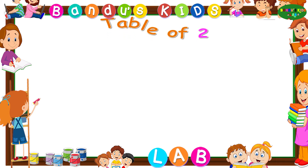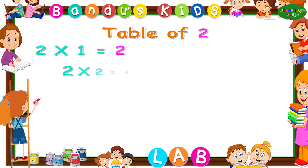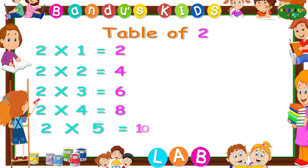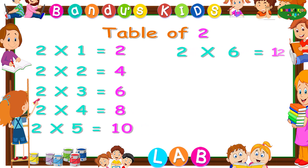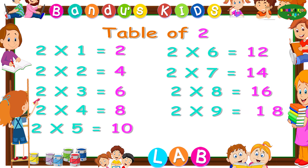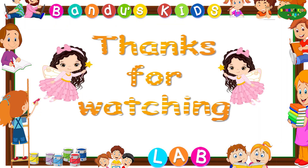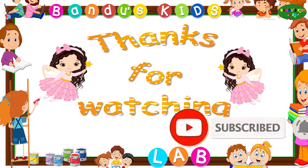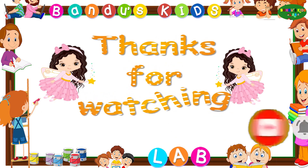Now let's revise the table of two. Two ones are two. Two twos are four. Two threes are six. Two fours are eight. Two fives are ten. Two sixes are twelve. Two sevens are fourteen. Two eights are sixteen. Two nines are eighteen. Two tens are twenty. If you like our video then please like, share and subscribe to our channel. Thanks for watching, bye bye!